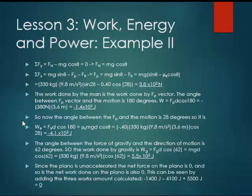Now the work done by the man is the work done by the P vector. The angle between the P vector and the motion is 180 degrees. So looking at our numbers here, the work is going to be the force from the first part, the 3.8 times 10 to the 2 newtons, times the distance which is 3.6 meters, times the cosine of 180 degrees. So the cosine of 180 degrees gives us a negative 1 immediately. So then we see that it's just 380 newtons times 3.6 meters, giving a value of negative 1.4 times 10 to the 3 joules.